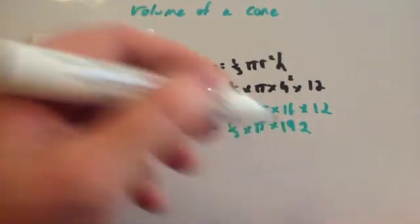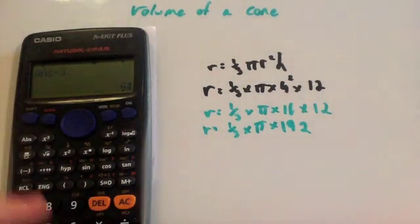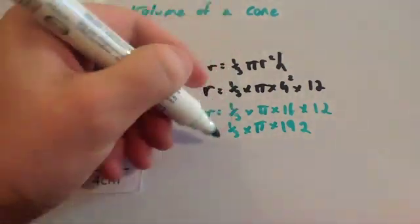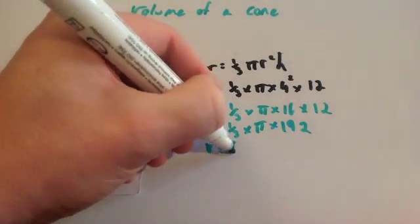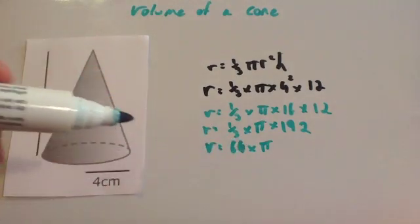And then, you could do a third of 192. So, divide 192 by 3, which is 64. What I'm doing at the minute here is just working out the numbers part. So, we've got the volume equals 64 times pi.